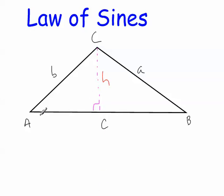If I look at the left triangle here, given this angle A, I know that the sine of angle A will equal H, which is the opposite side, over B, which is the hypotenuse. And multiplying both sides by B, I get H equals B times the sine of A.